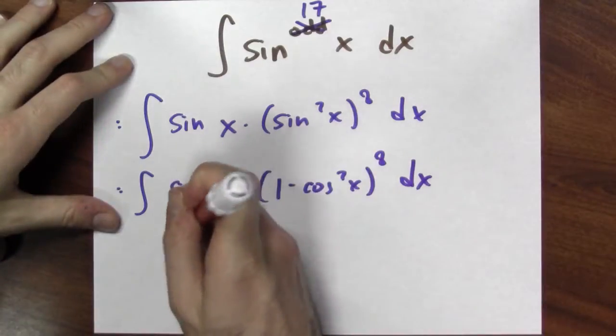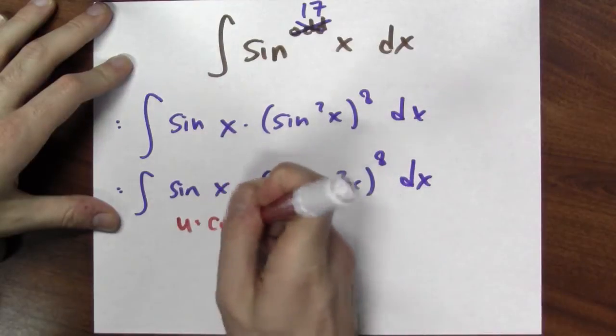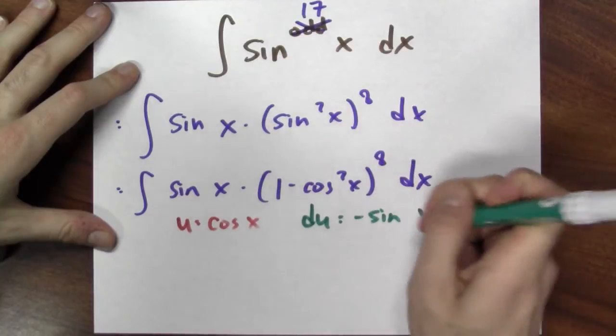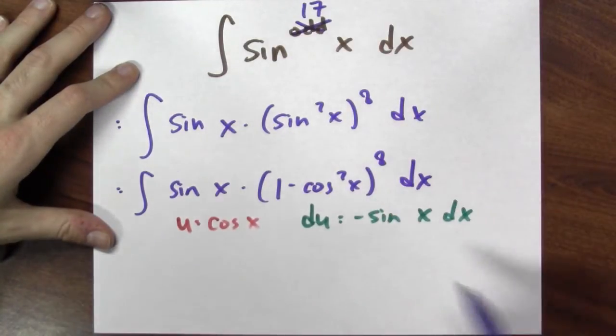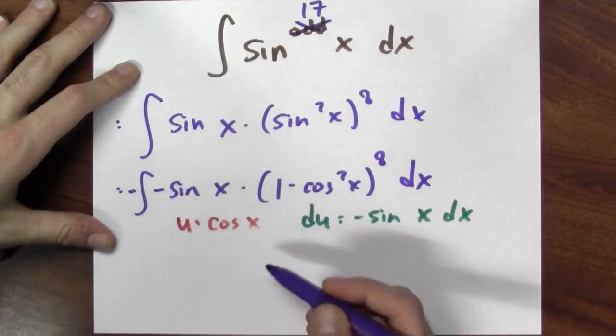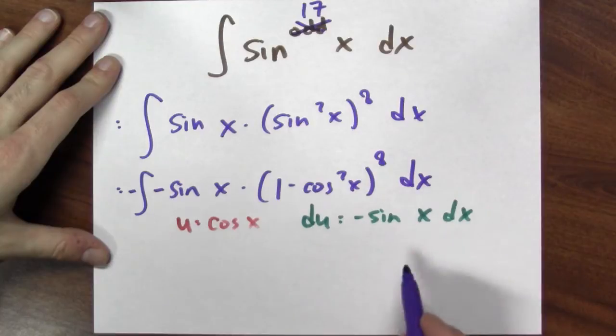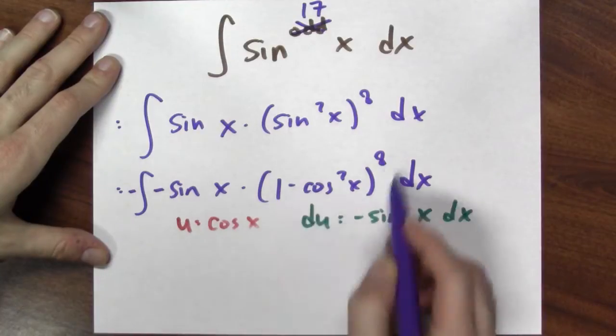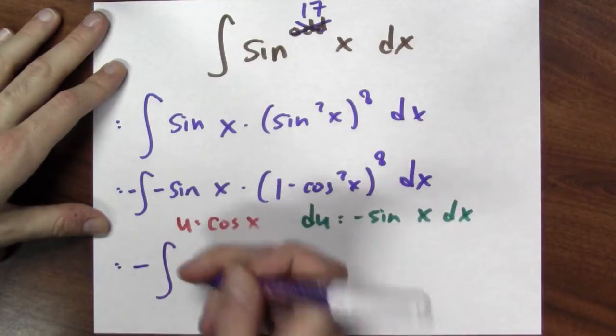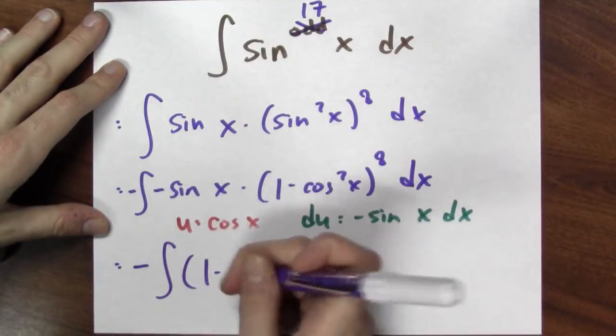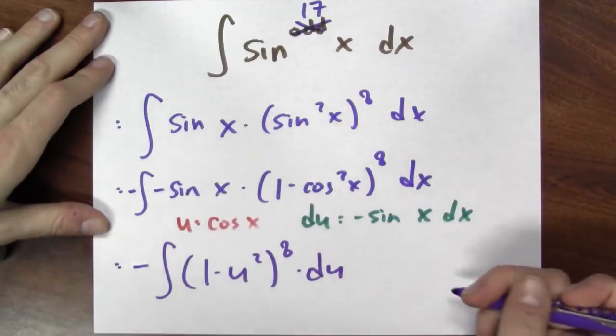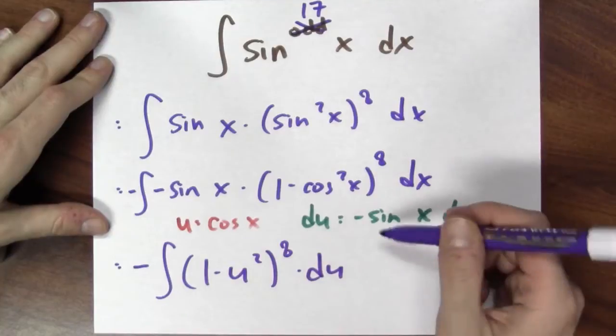So make a substitution u equals cosine x, and in that case du is minus sine x dx. Now maybe you're complaining you don't see a minus sign, you only see sine. But I'll just put a pair of canceling minus signs there. And now I see a minus sine x dx, so I've got a du. And the rest I can write in terms of u. Specifically, this becomes negative the anti-derivative of 1 minus u squared to the eighth power du is what's left over. And this is an anti-differentiation problem that I can do.